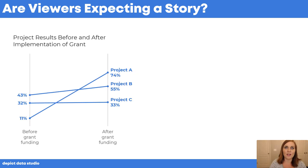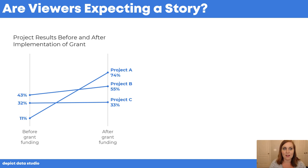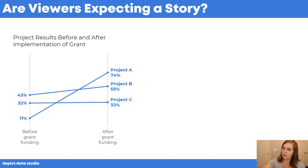Here's the traditional view — a fictional slope chart showing project results before and after a grant, comparing projects A, B, and C. It has a topical title, so we know generally what the graph is about, but there's no takeaway message, no 'so what,' and all the lines are the same color, so no project really stands out over the others.